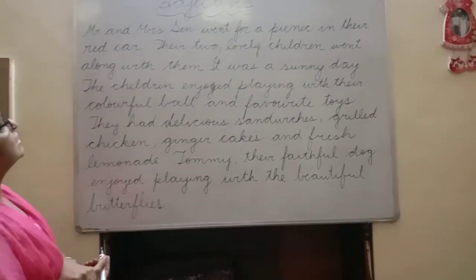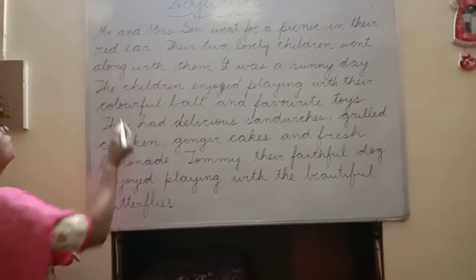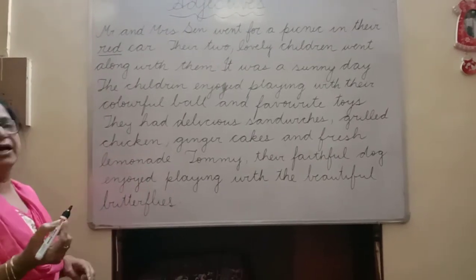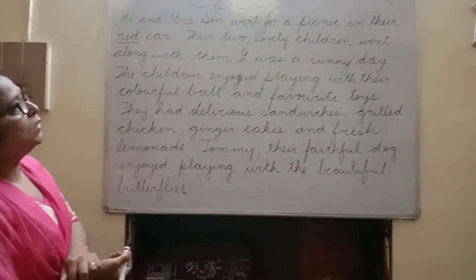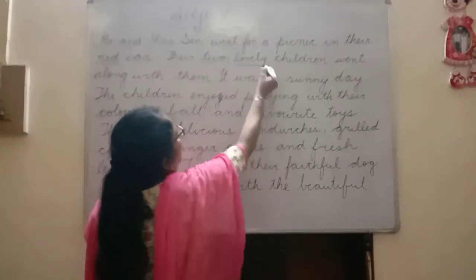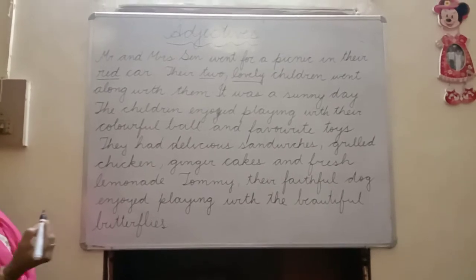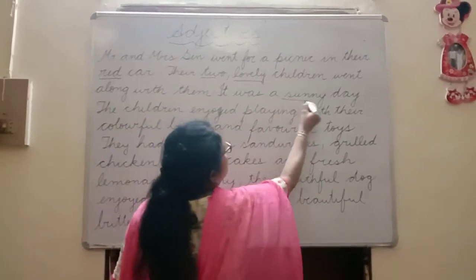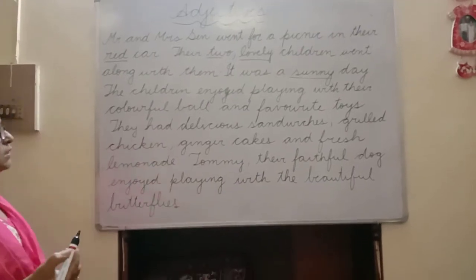Children, let's underline the describing words here. Mr. and Mrs. Sane went for a picnic in the red car — what type of car? Red car. So 'red' is an adjective. Their two lovely children — 'two' and 'lovely' are adjectives here. It was a sunny day — how was the day? It was a sunny day. So 'sunny' is a describing word, an adjective.